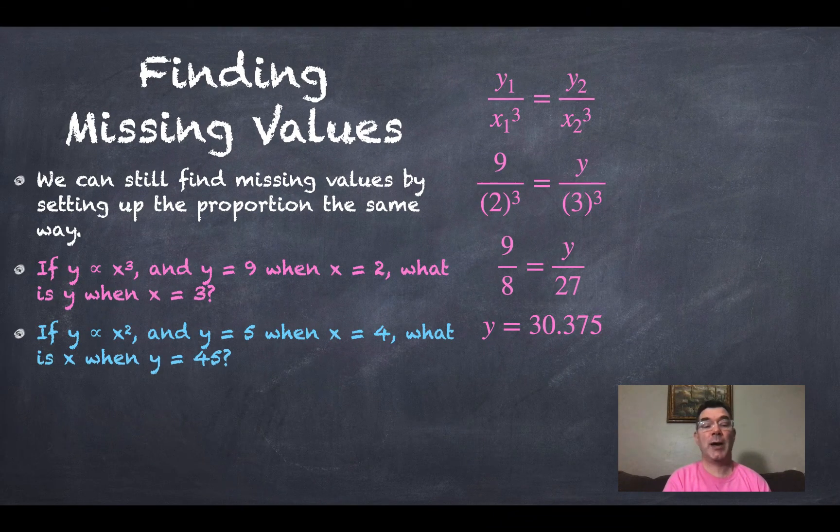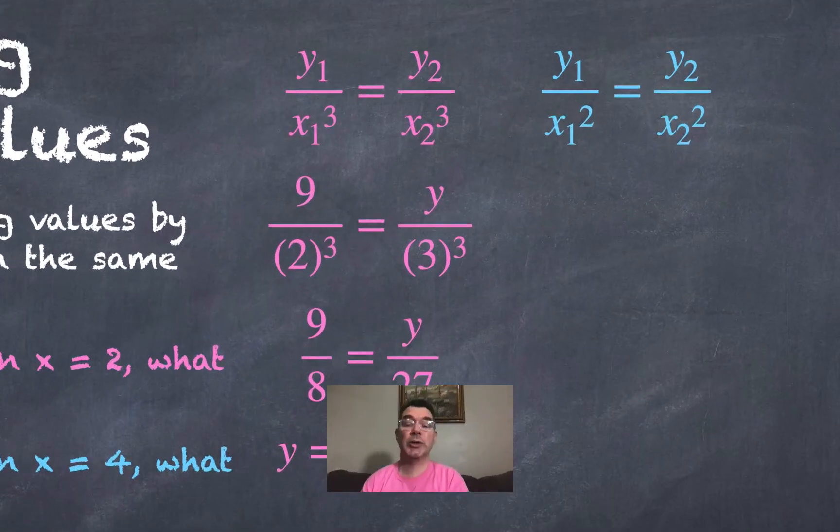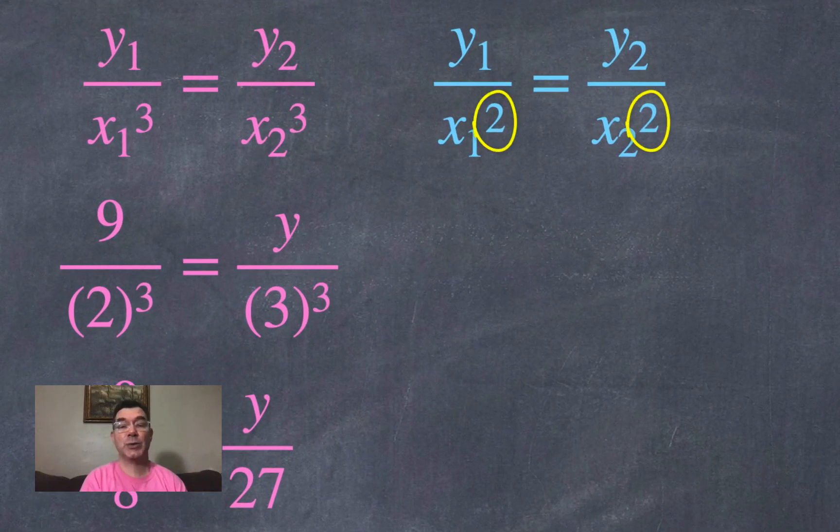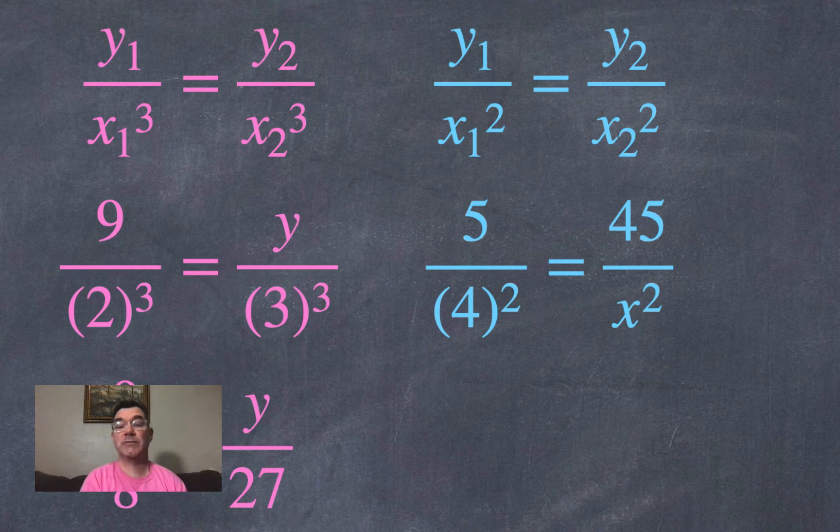And now if y was proportional to x squared, and I knew that y was equal to 5 when x was equal to 4, what would x equal when y is 45? Setting up that proportion again, making sure that I square the x's because that's what the proportion is. And plugging in what I know. The first y was 5. The first x was 4. The second y was 45. And I need to know the first x.